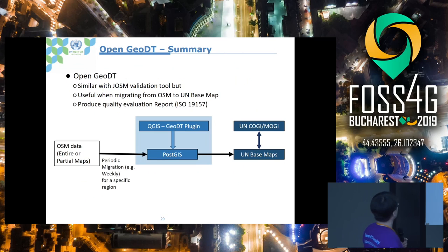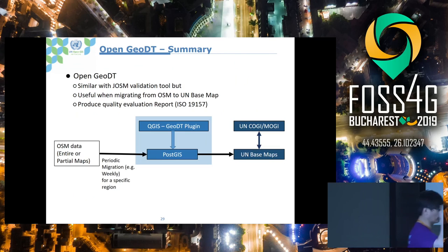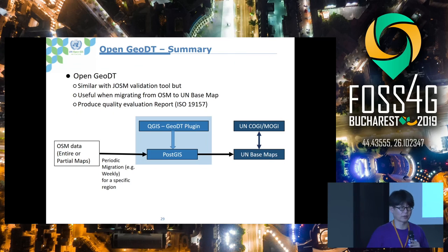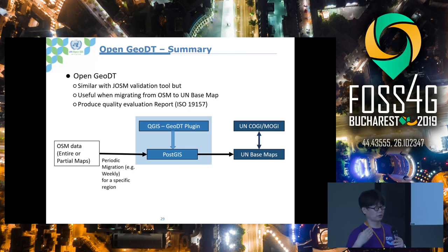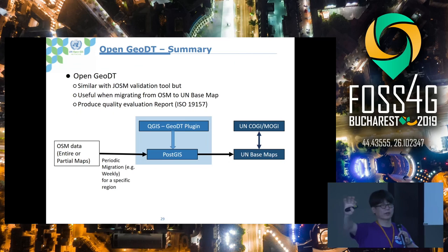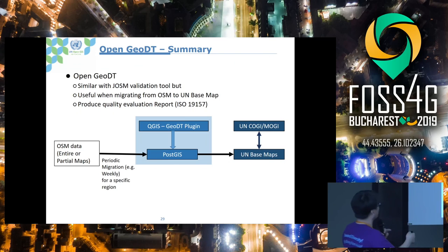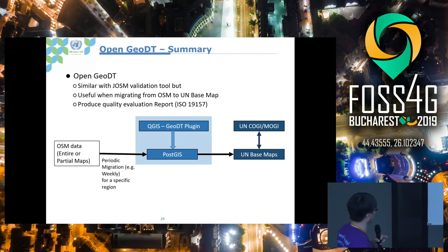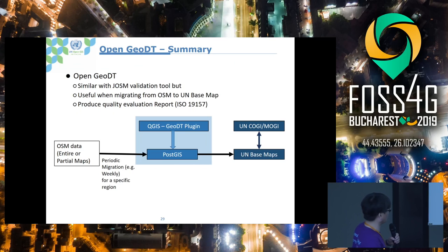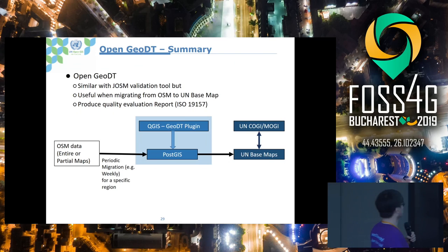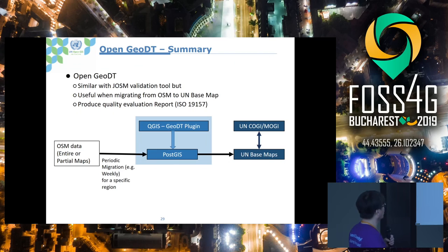As a summary for OpenGeoDT: the contribution is that, unlike JOSM which is an interactive process and not batch processing, OpenGeoDT is designed for use cases like a National Mapping Agency receiving data from a subcontractor and checking whether it satisfies evaluation criteria. Once we have OpenStreetMap data — as Diego explained in the previous presentation — this data is periodically migrated to UN Basemap data. During that migration, we need to validate whether there are errors in the OpenStreetMap data. OpenGeoDT supports this validation process.